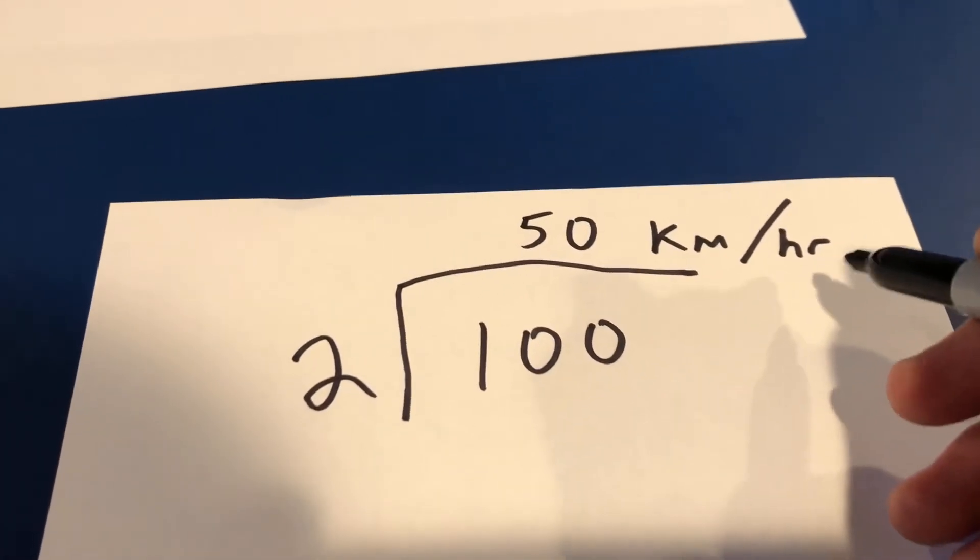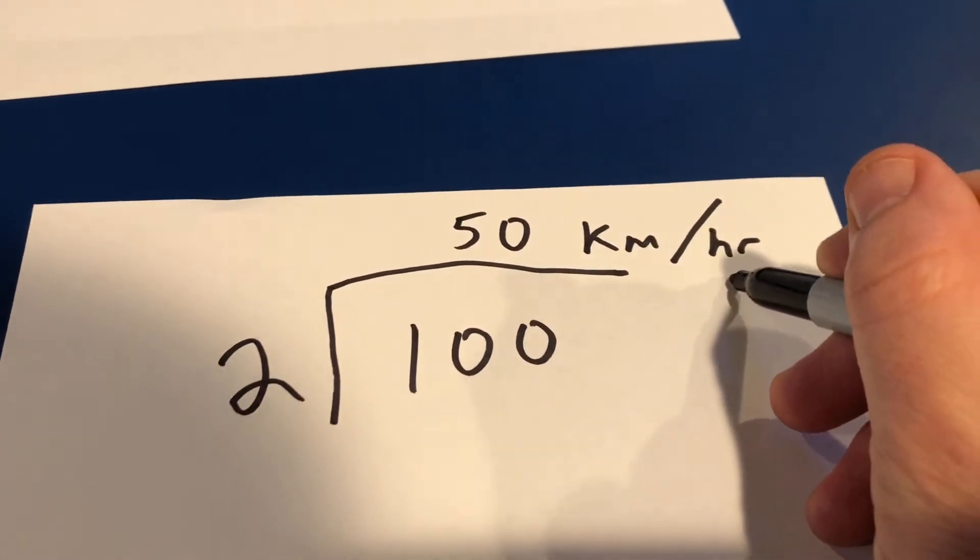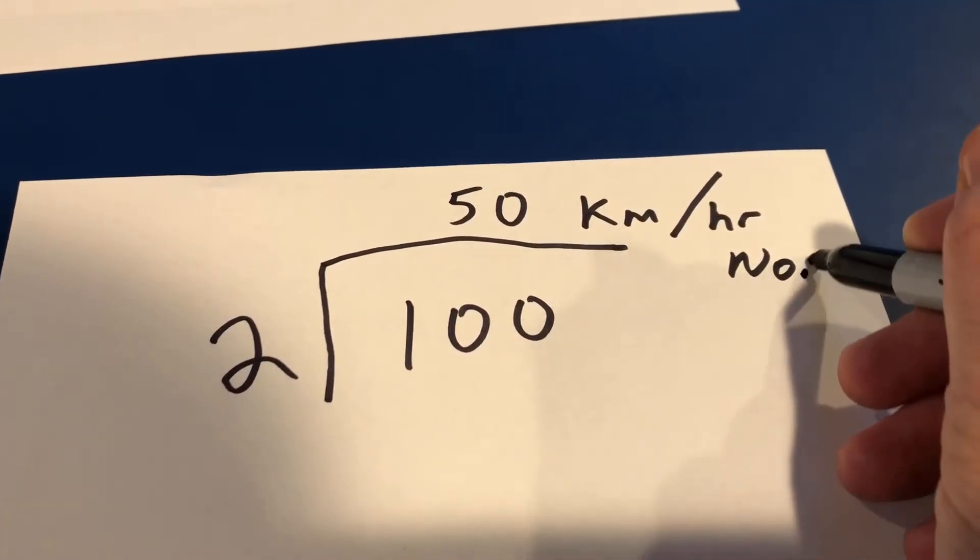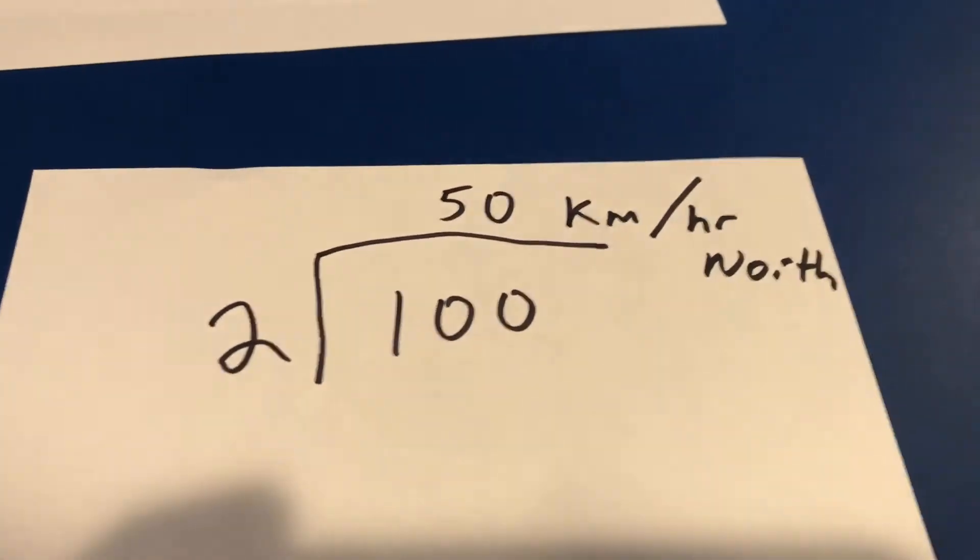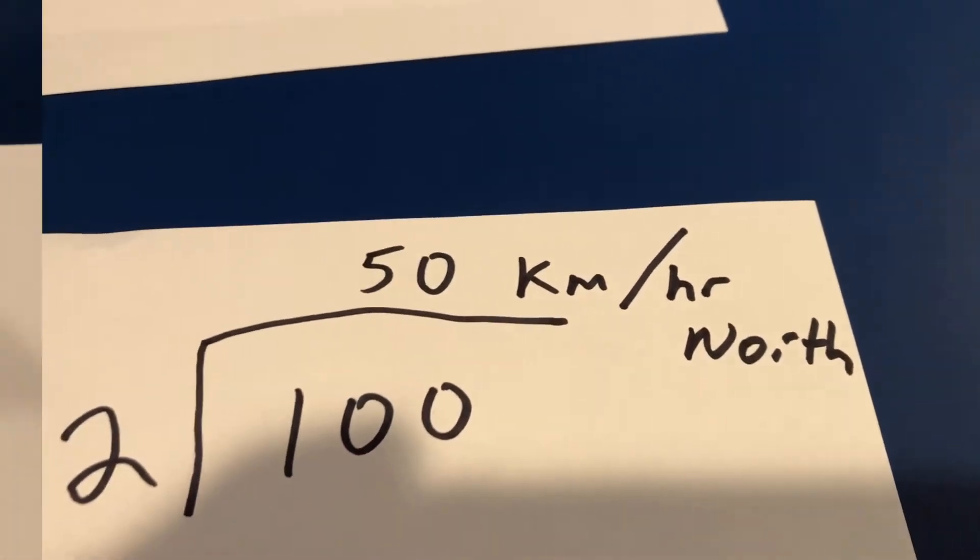And if you want to turn that into velocity, just notice what direction they're going. Are they going north? Yes, they are. And now I have the velocity. 50 kilometers per hour north.